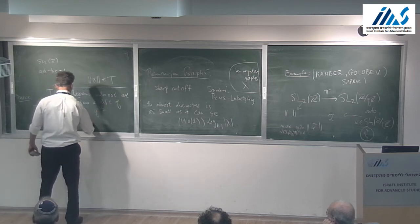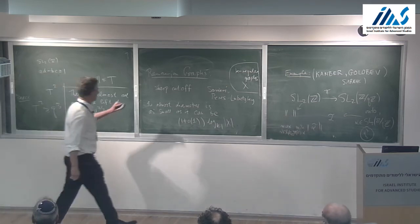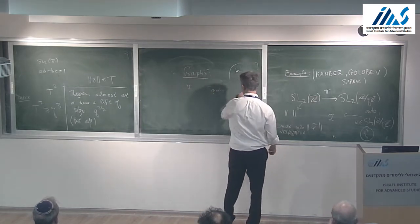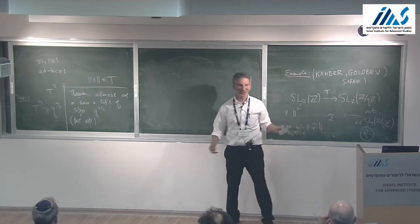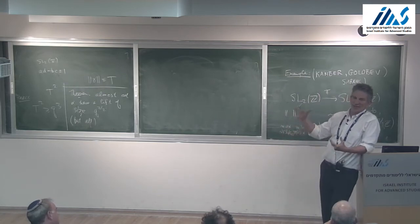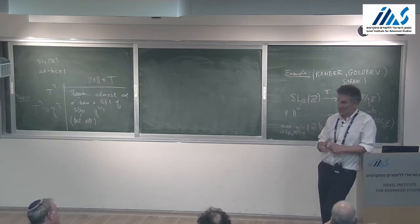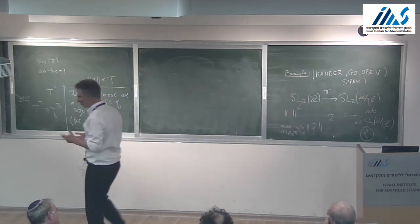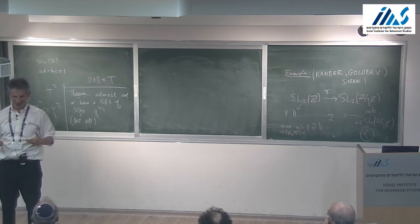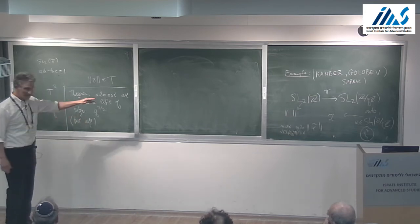Just like in the Ramanujan graph case there is a big hole—there are certain matrices which require q² and you can give examples. The question is whether almost all elements lift to something of size q^{3/2}, and that should follow from Ramanujan. But Ramanujan is not known here. Theorem: almost all α have a lift of size q^{3/2} (ignoring ε), but not all.